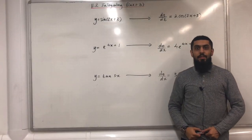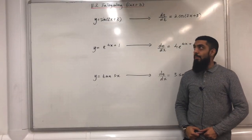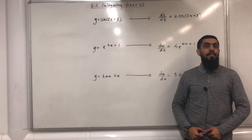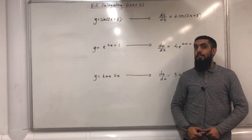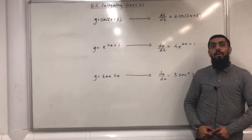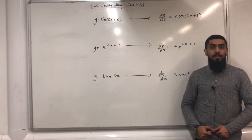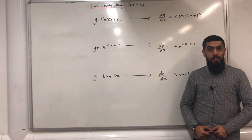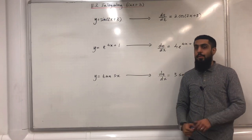Welcome back. In this video I'll be looking at 11.2: integrating f(ax + b) where a and b are constants. 11.2 represents chapter 11, section 2 of the Pearson A-level Maths Pure Maths Year 2 textbook.